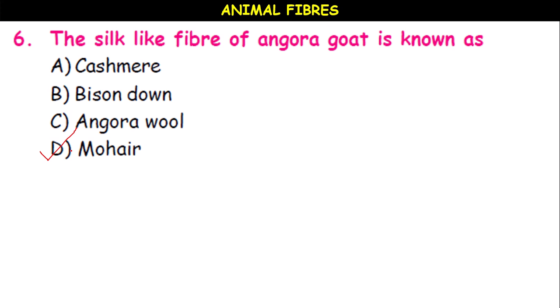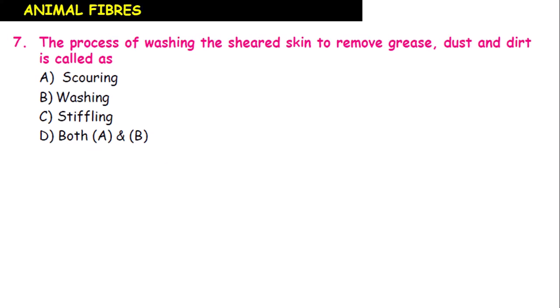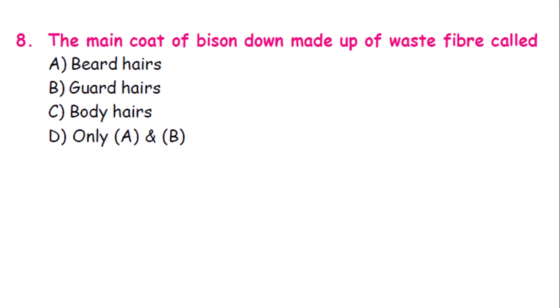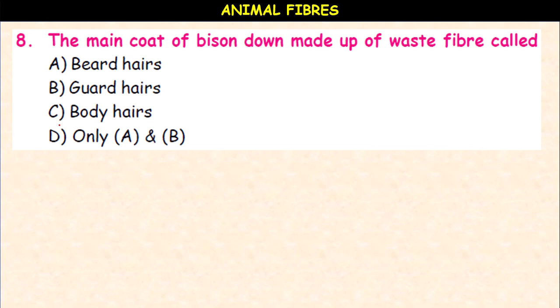The process of washing the sheared skin to remove grease, dust, and dirt is called scouring, washing, stifling, or both A and B? It is scouring and washing — both A and B. The main coat of bison down is made up of coarse fiber called beard hairs or guard hairs? The answer is only A and B, meaning beard hairs and guard hairs.